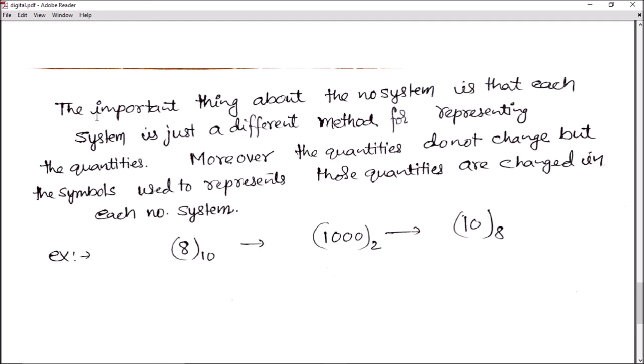The important thing about the number system is that each system is just a different method for representing the quantities. It is a different method of representing quantities, but this value does not change in the number system.